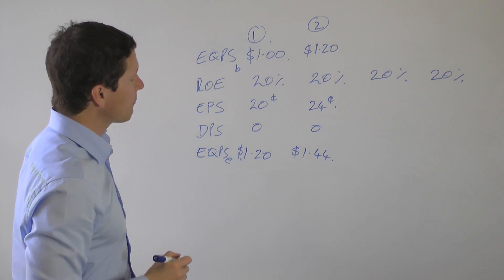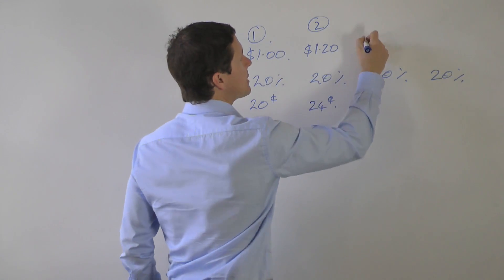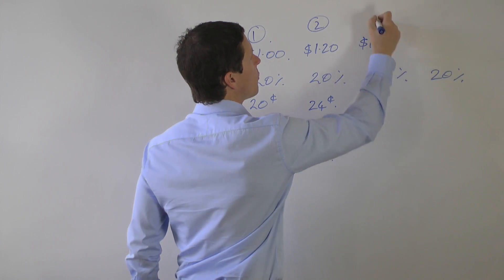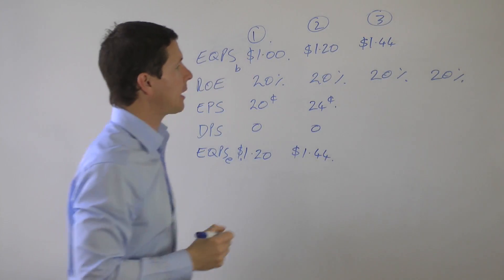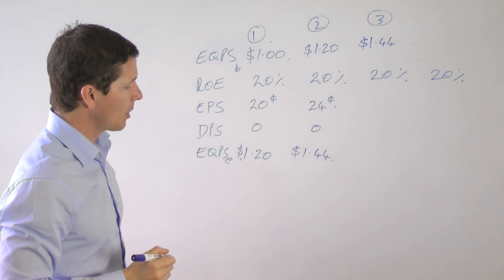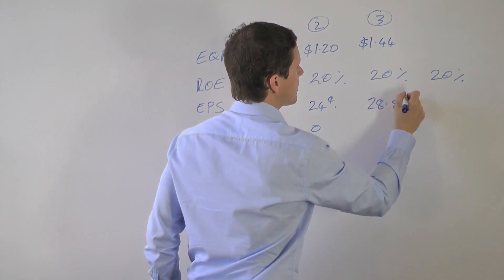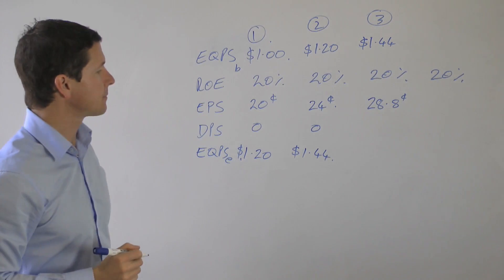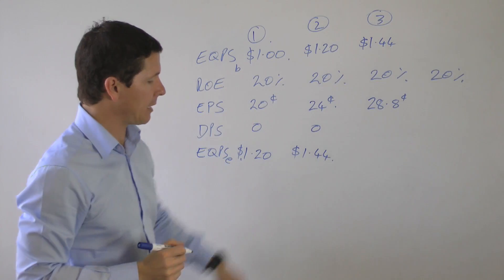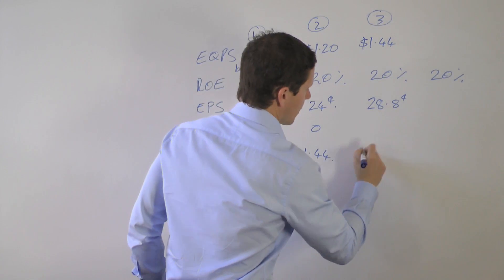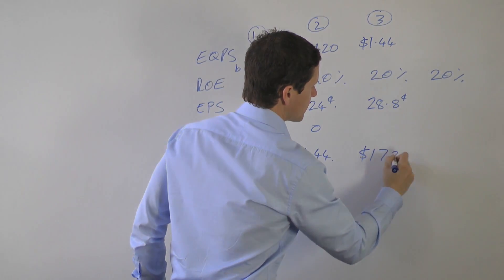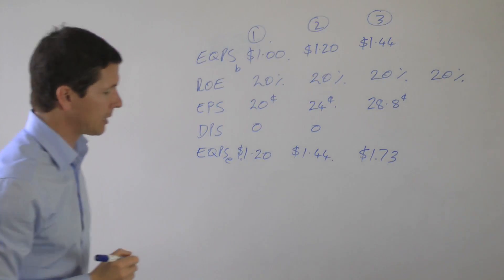At the beginning of the third year, the company starts with $1.44 of equity per share on which it earns 20 percent, which is the same as 28.8 cents per share. Add that on to the equity at the beginning and we get $1.72 or $1.73, close enough.